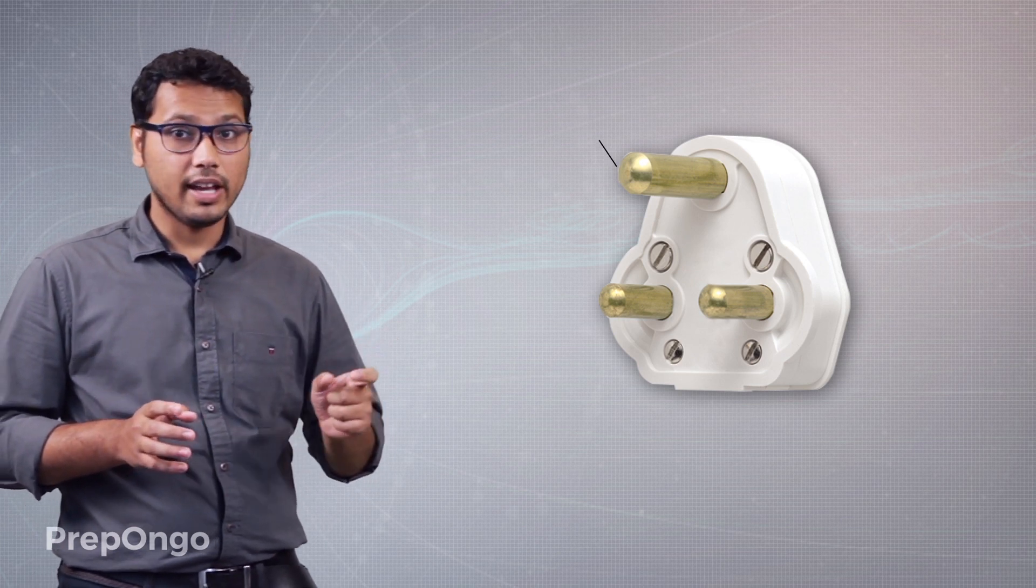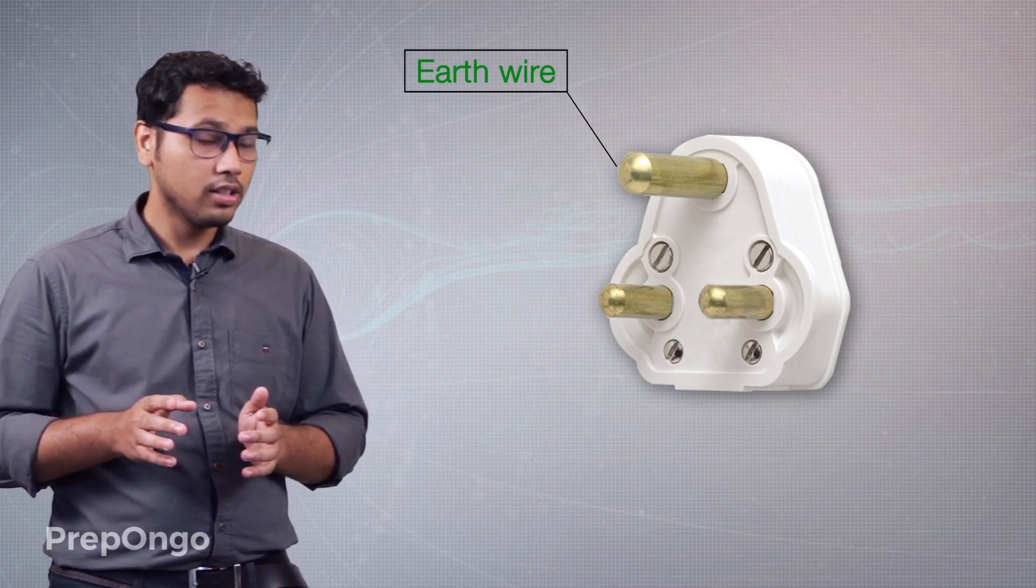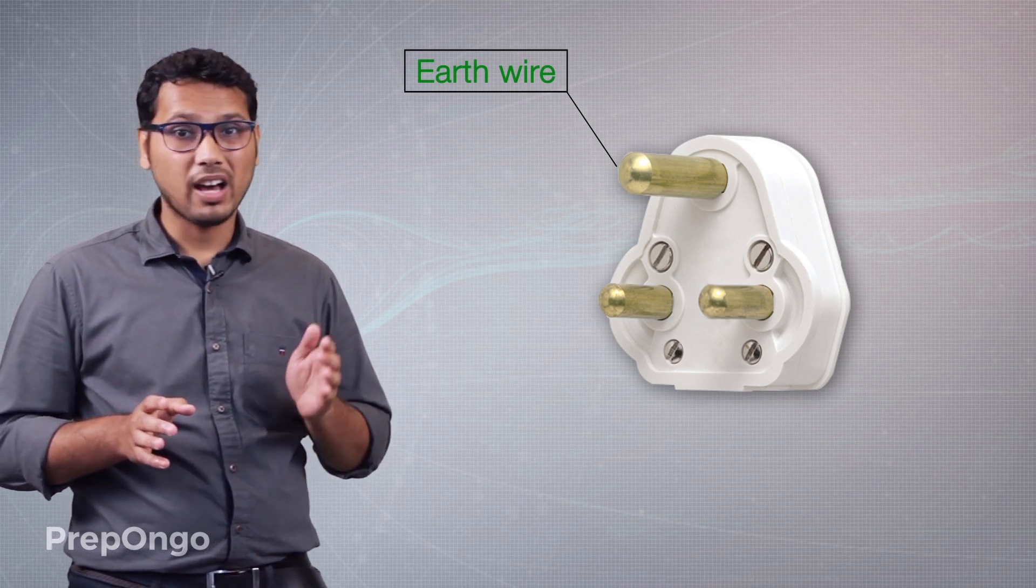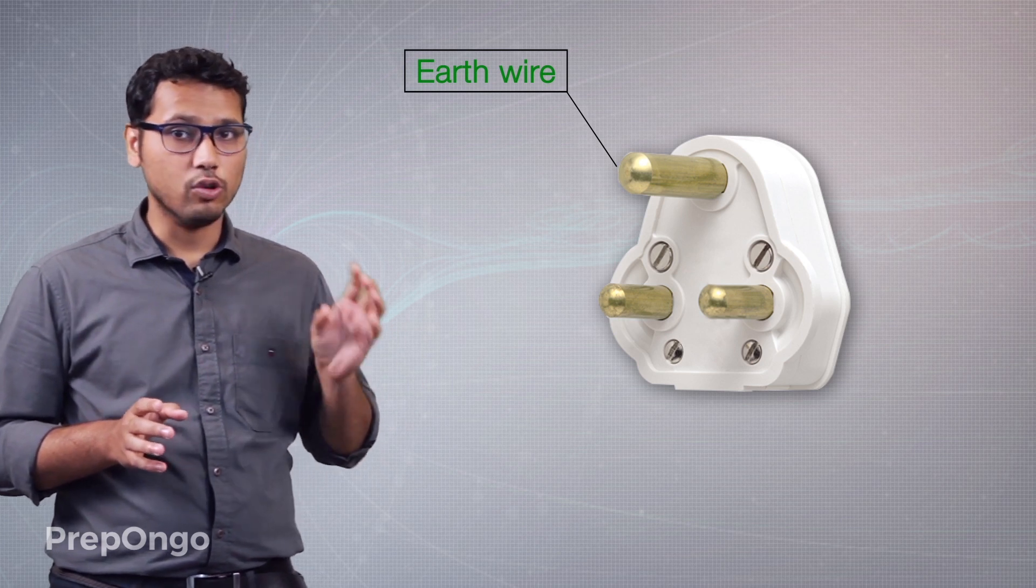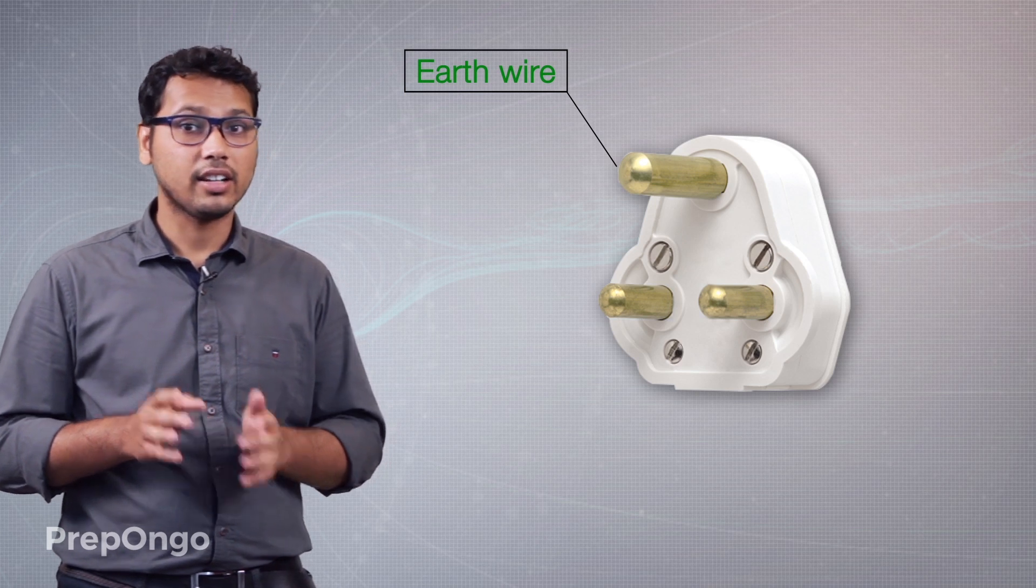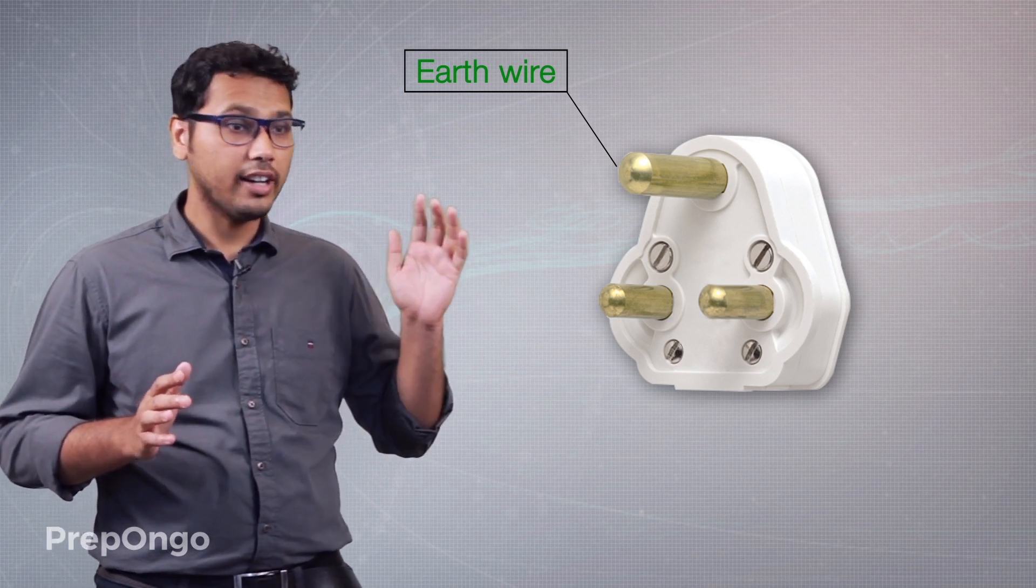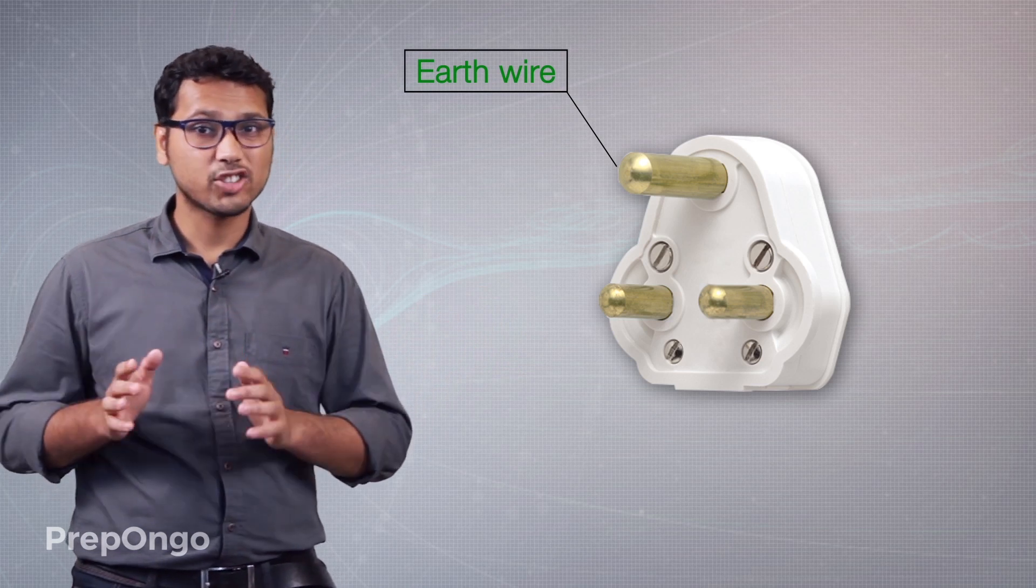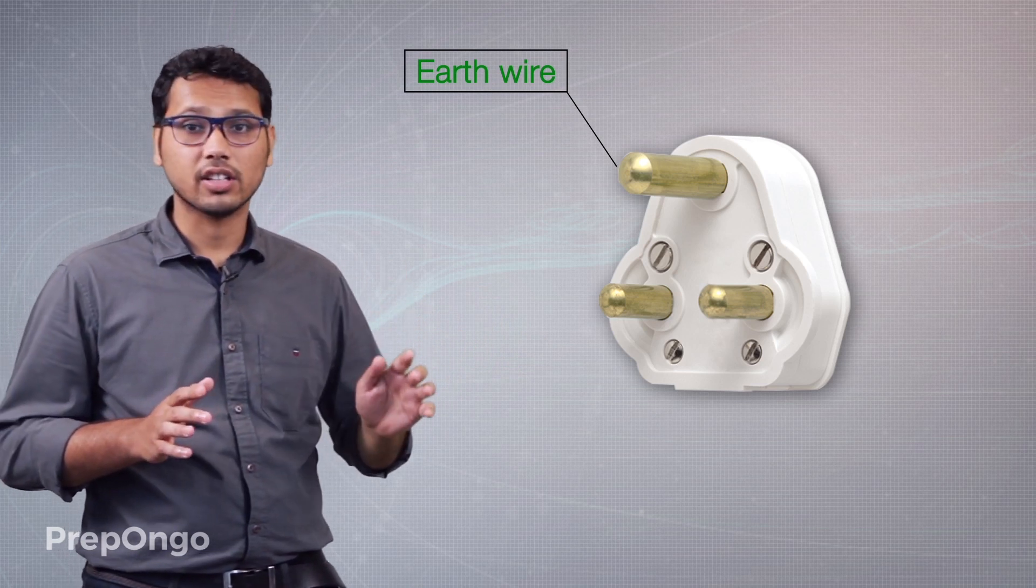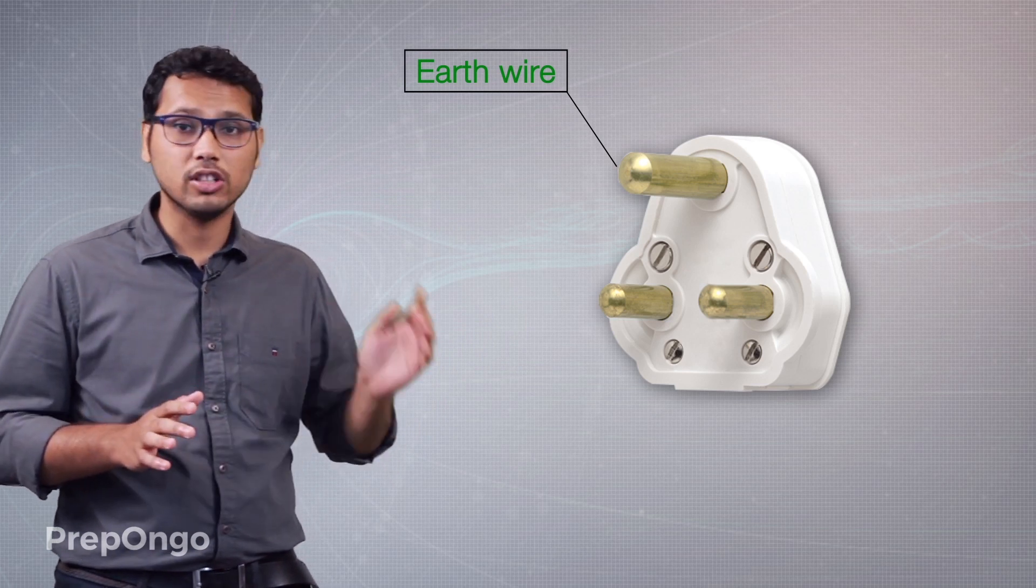The thicker pin is for the earth wire. This is to ensure that every time you plug in the socket or take it out, the earth pin is the last pin which gets connected to the socket. This is to ensure that the extra charge which gets stored on the metallic surface of the appliance flows through the earth pin into the earth.